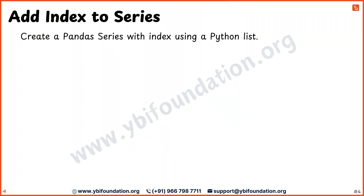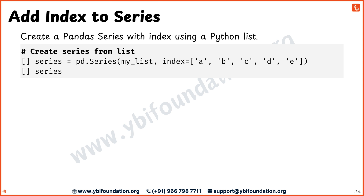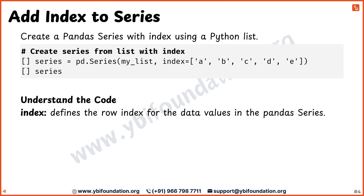Now let's add a row index to the pandas series. In this code, we assign alphabets a, b, c, d and e as the index. The index is an optional argument that helps us specify a custom row index. The custom row index can be a number, text, date, time, etc.